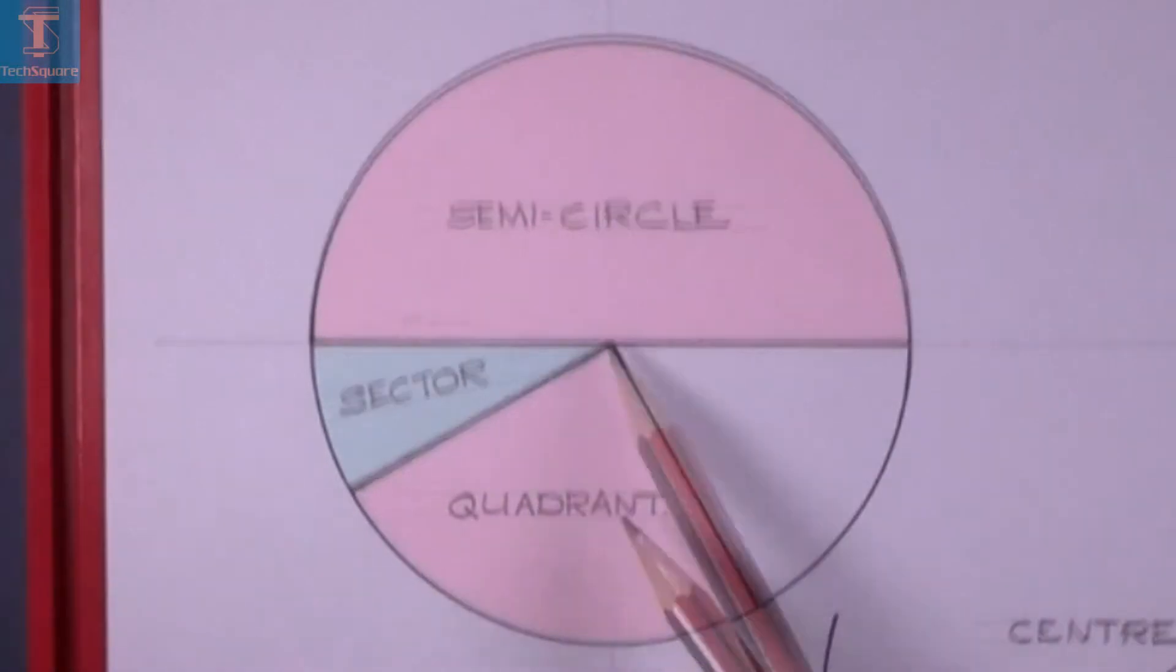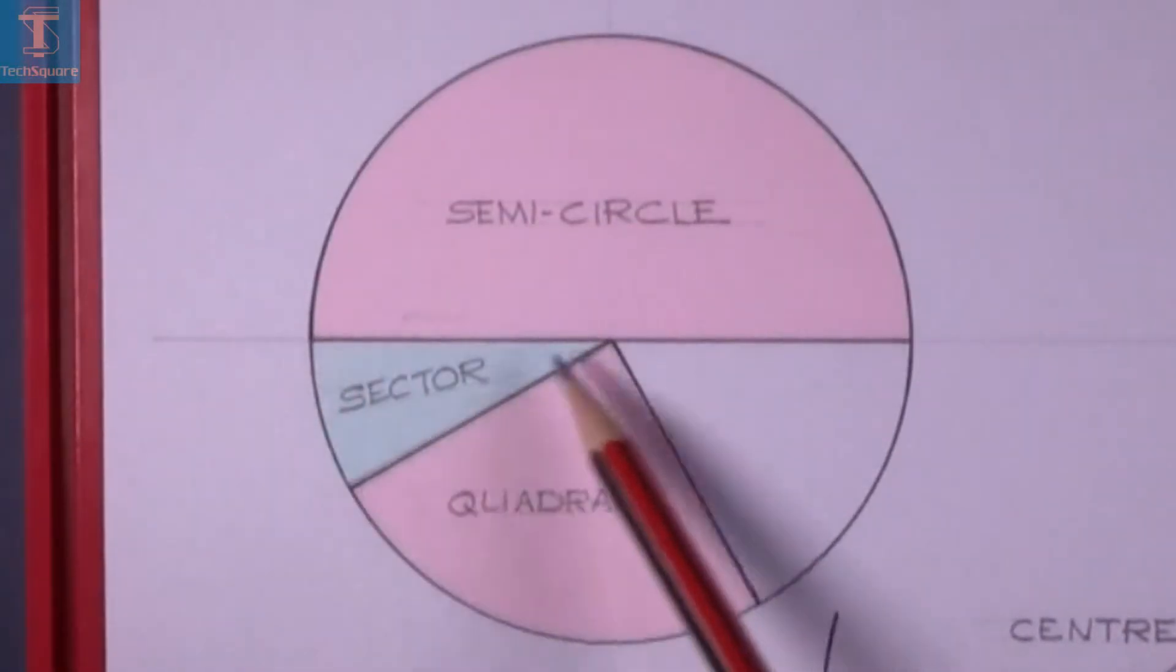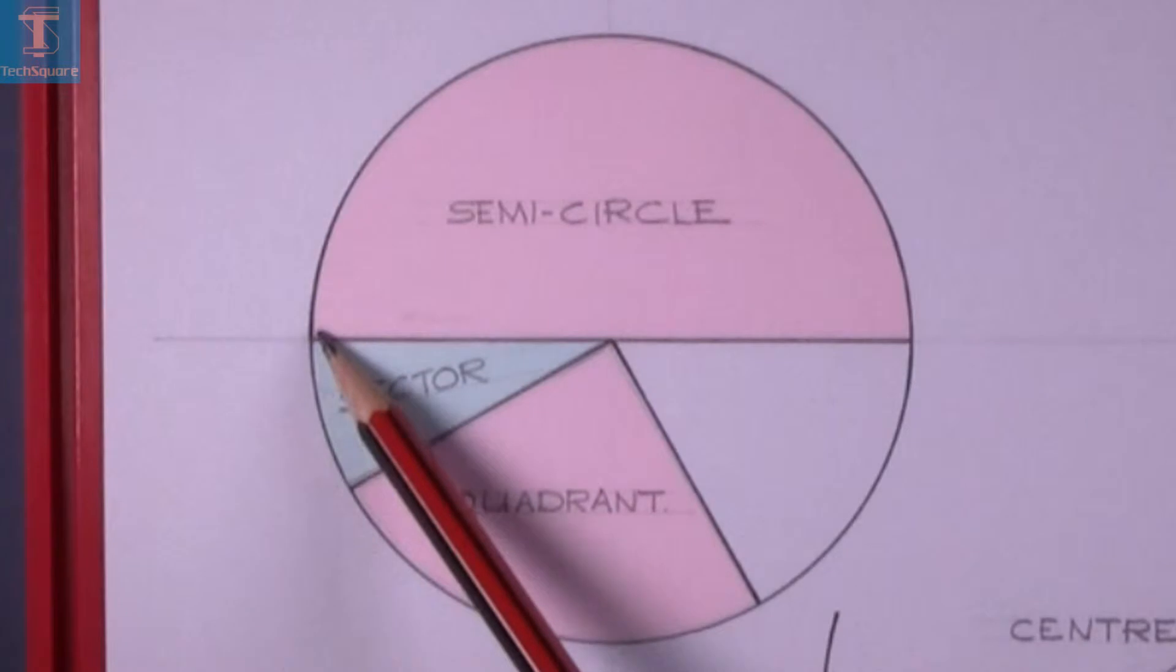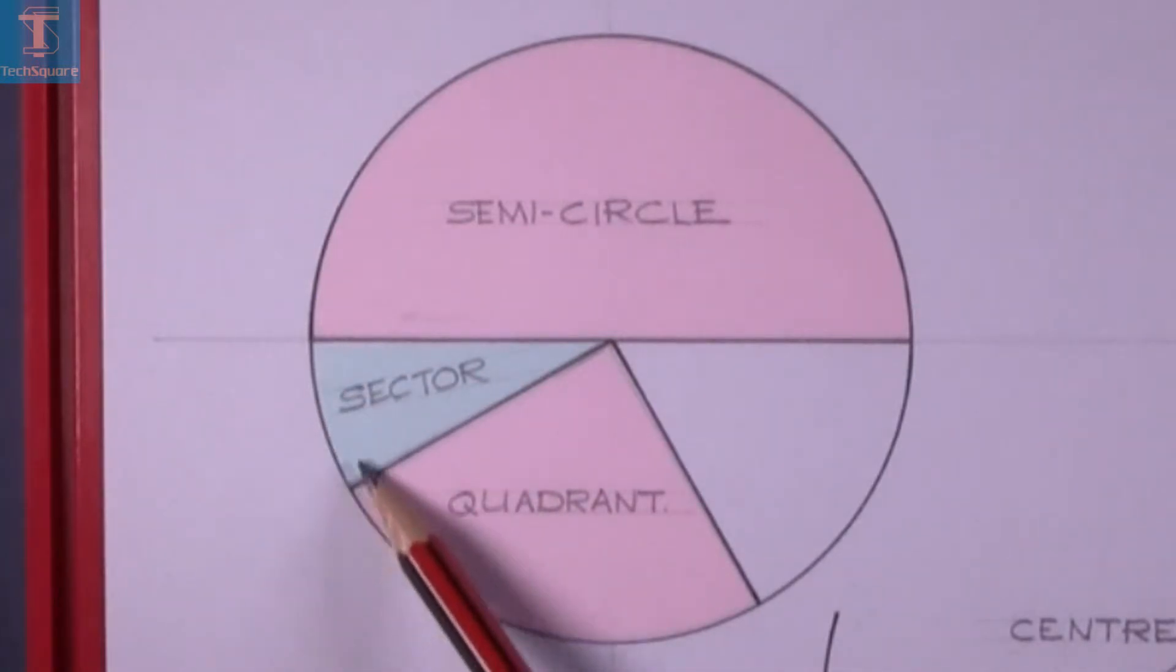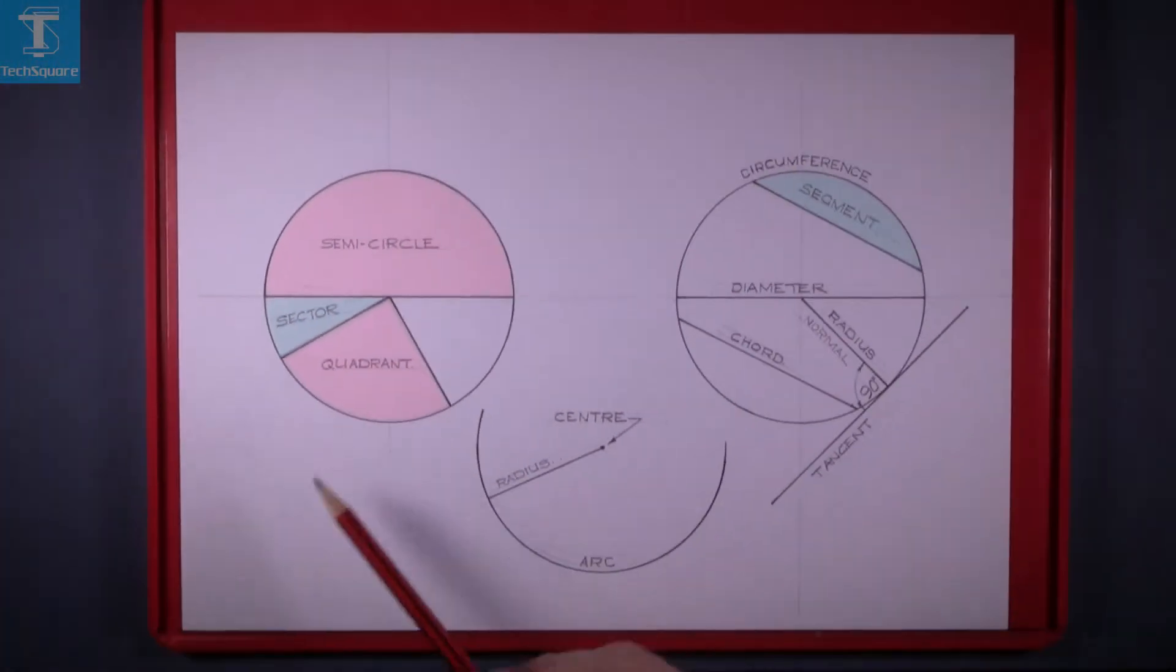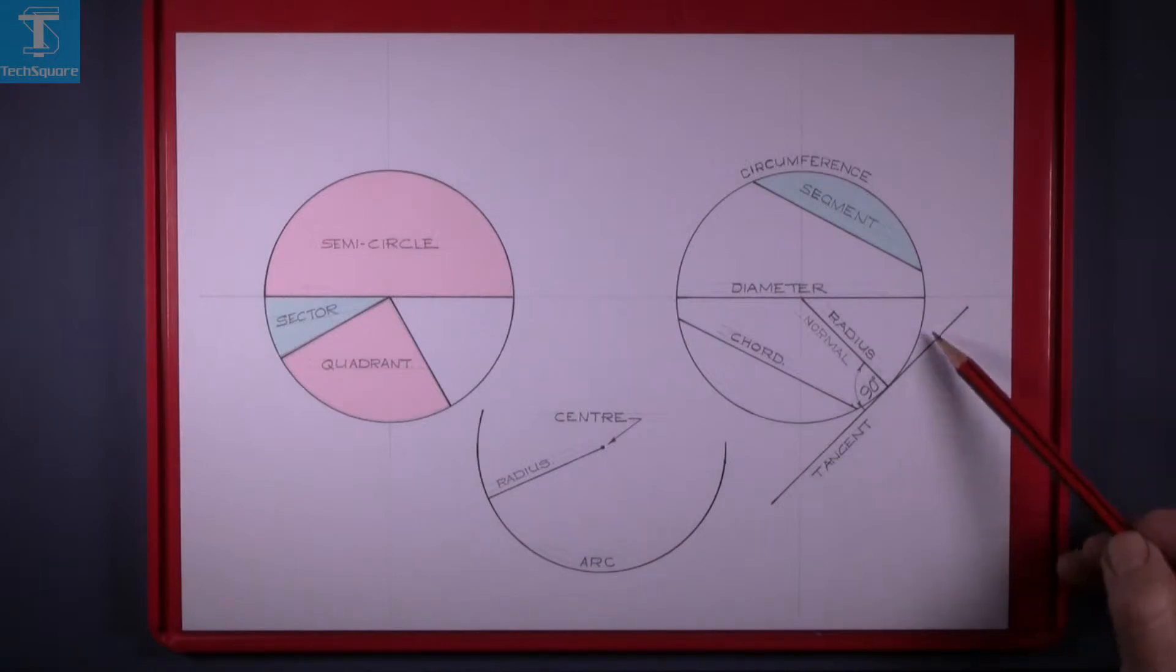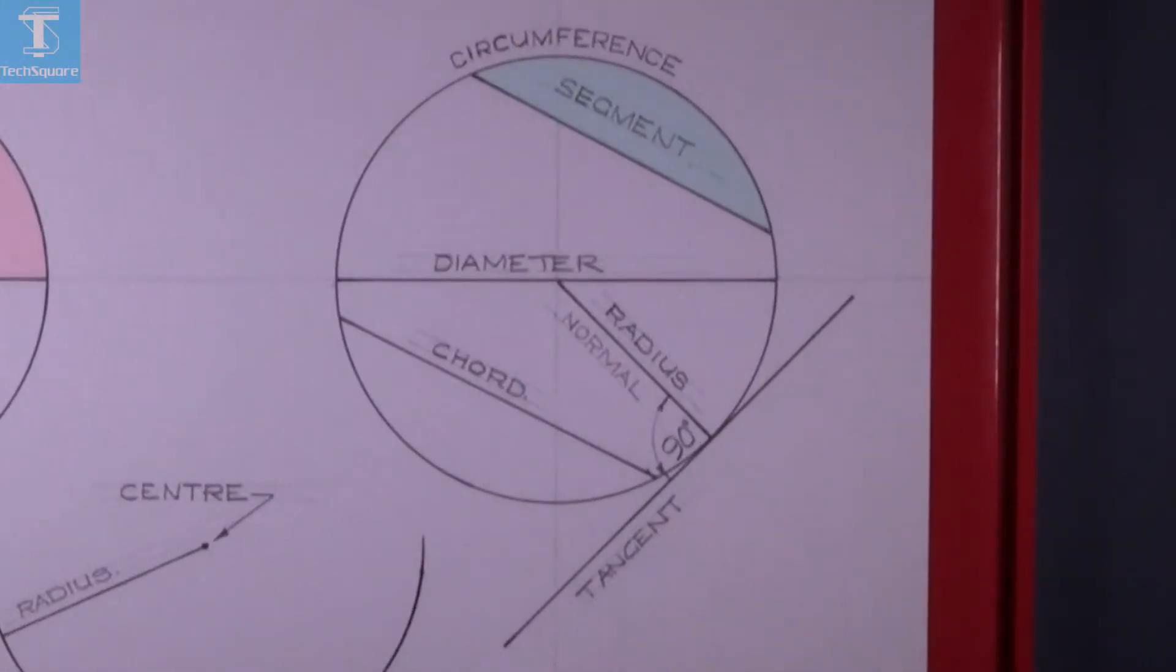In this case here we have a sector. There's two radii and part of the circumference, and that's called the sector. Over here I've drawn a line touching the circle at one point, and that's called a tangent.